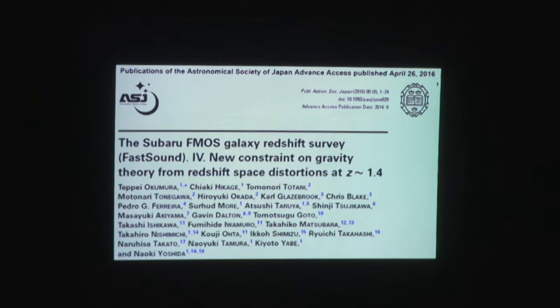And it's a paper that just came out from this Japanese group, and it's called the Subaru FMOS Galaxy Redshift Survey, or FastSound, and New Constraints on Gravity Theory from Redshift Space Distortions, which probably doesn't make much sense to you, but I'm going to see if we can explain this.